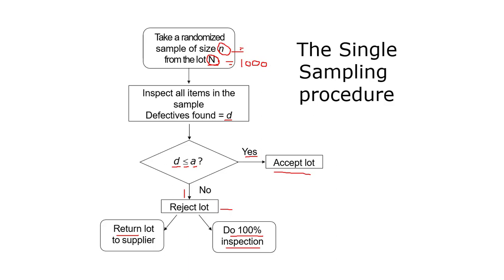Generally, by single sampling plan we inspect only the sample size. For example, if our lot size is 1000 and sample size is 100, we need to inspect only 100 items. From those 100 items we find defect D, and based on that defect we conclude whether to accept or reject the lot. This is a very useful sampling technique — instead of inspecting the whole lot, we inspect only a sample, which is a quick and easy process for supplier and consumer.